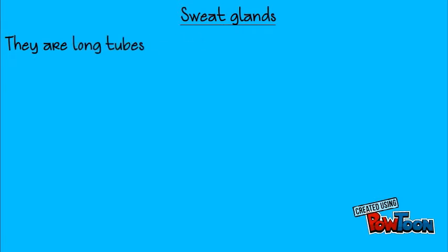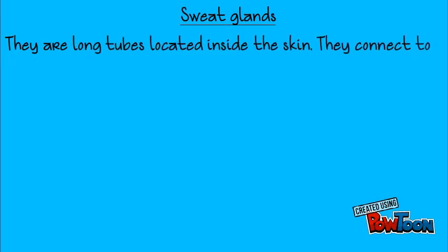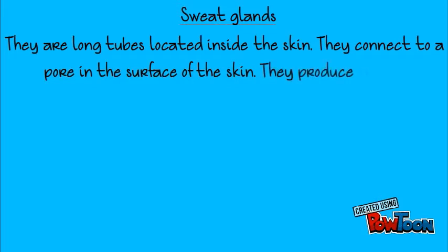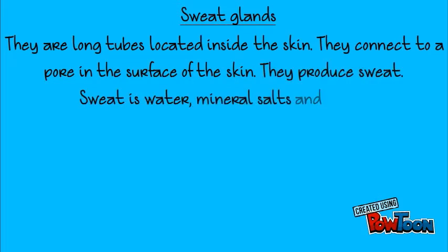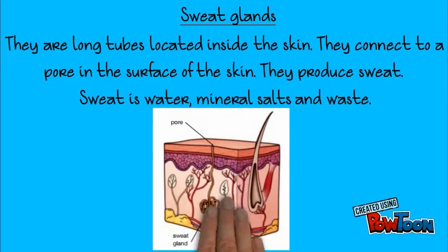Sweat glands. They are long tubes located inside the skin. They connect to pores in the surface of the skin. They produce sweat. Sweat is water, mineral salts, and waste. And here you are a drawing.